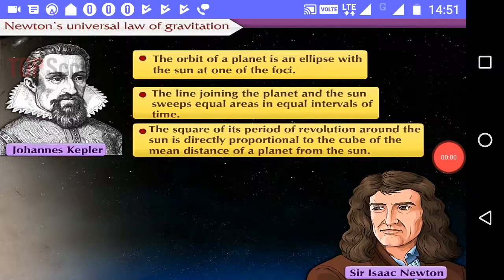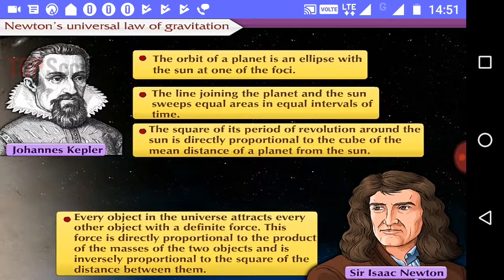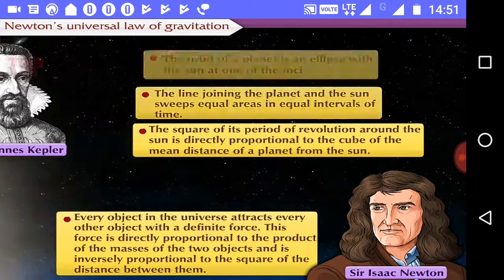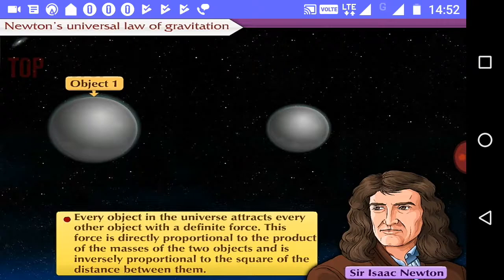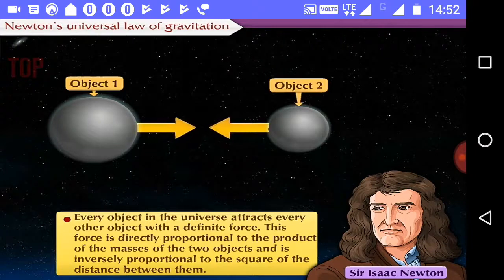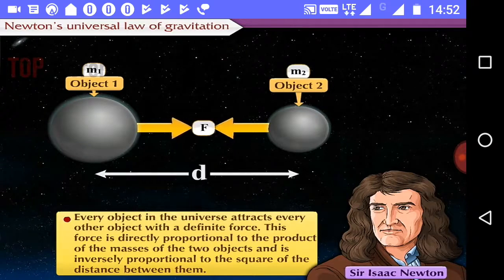Kepler's laws, including all other observations, and formulated his theory of universal gravity. According to this theory, every object in the universe attracts every other object with a definite force. This force is directly proportional to the product of the masses of the two objects and is inversely proportional to the square of the distance between them.